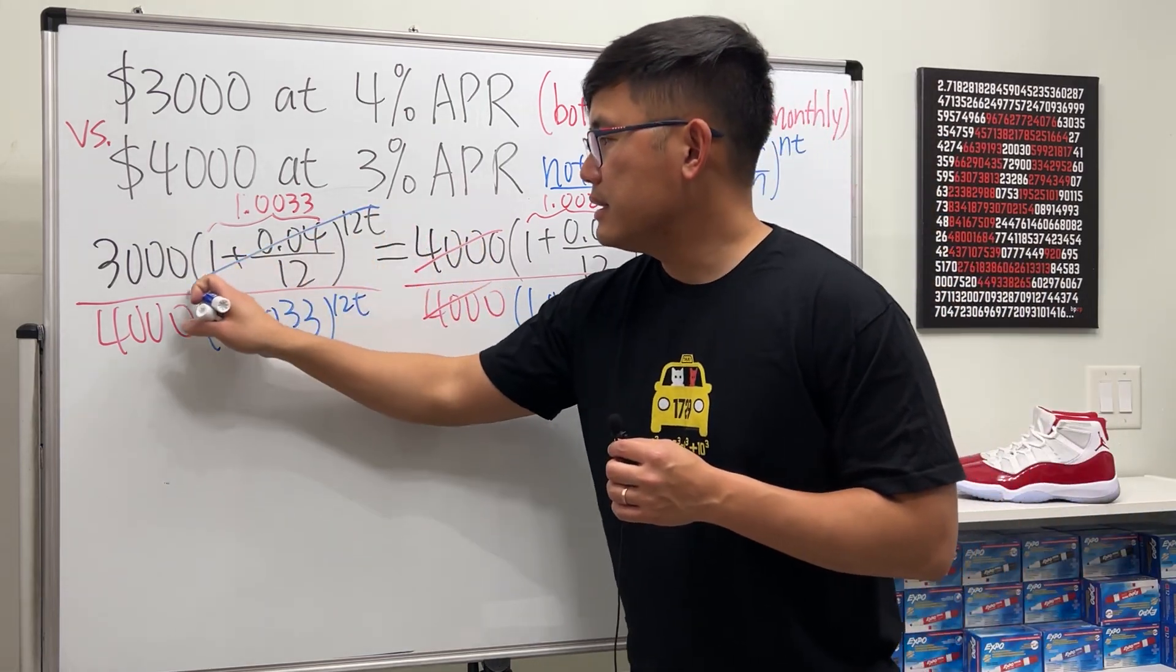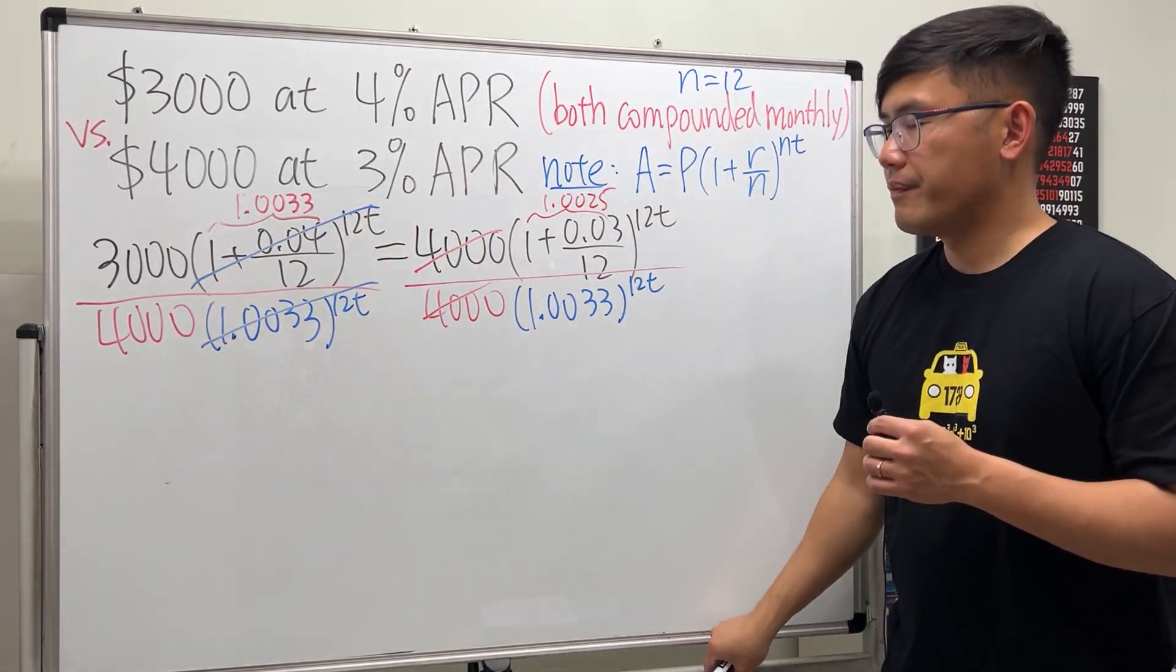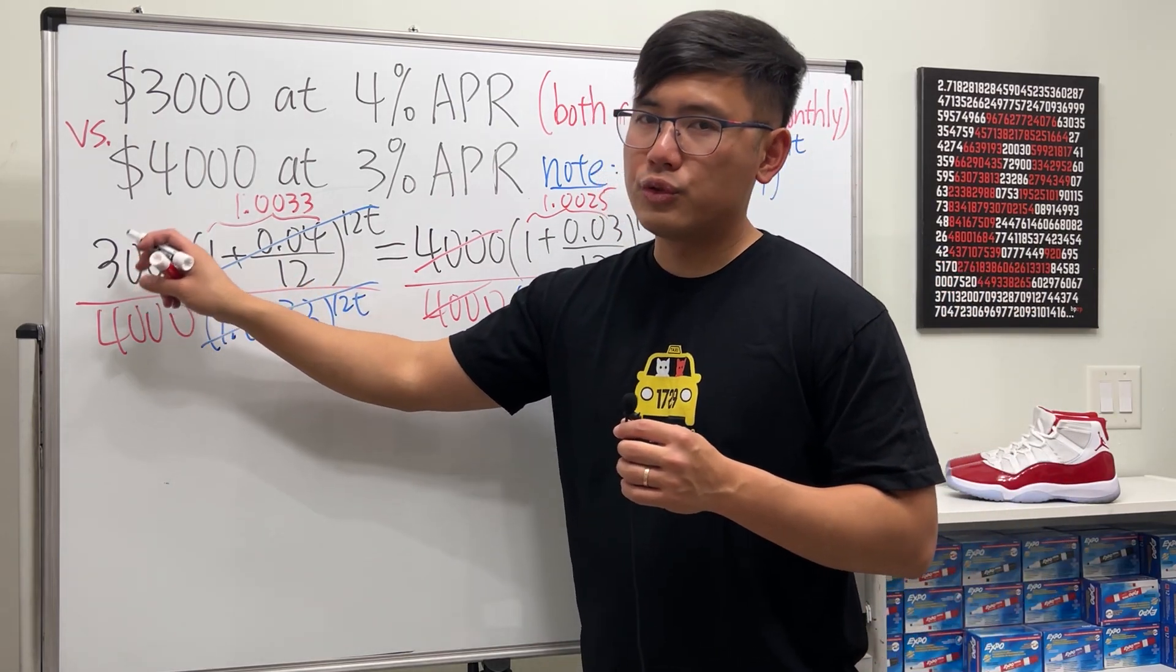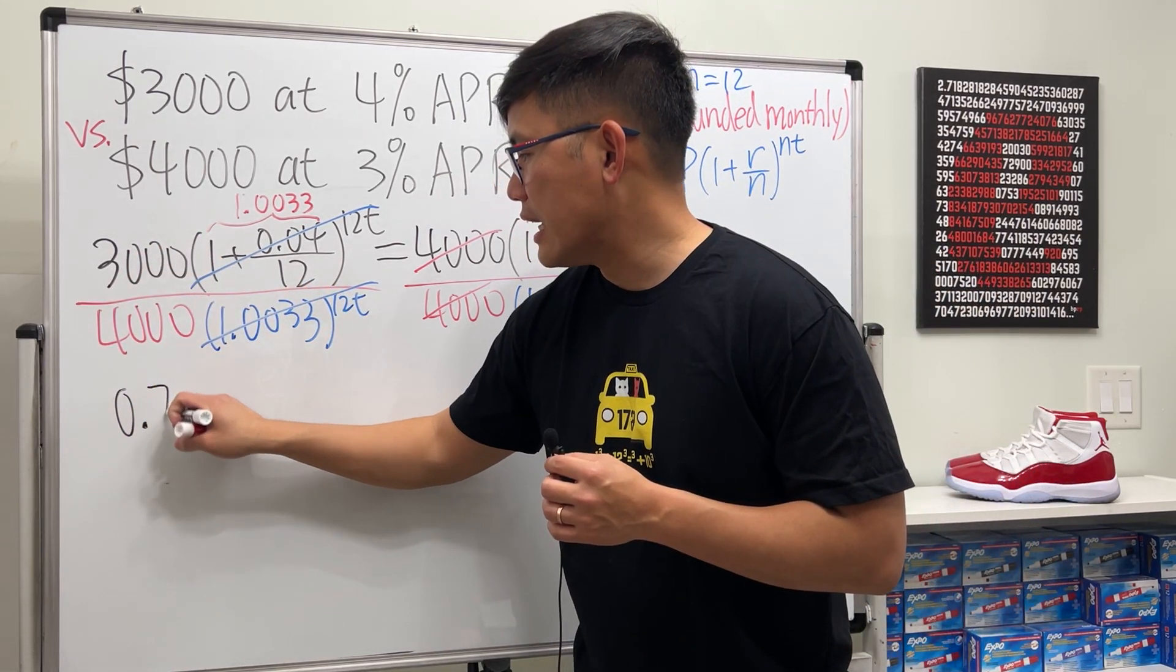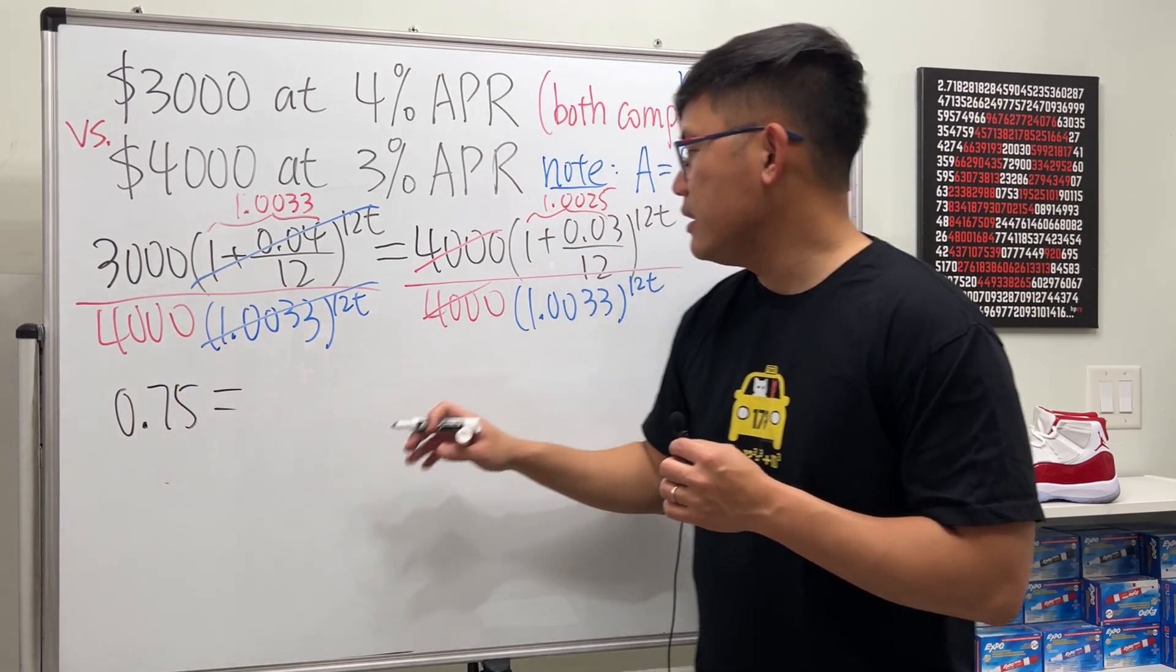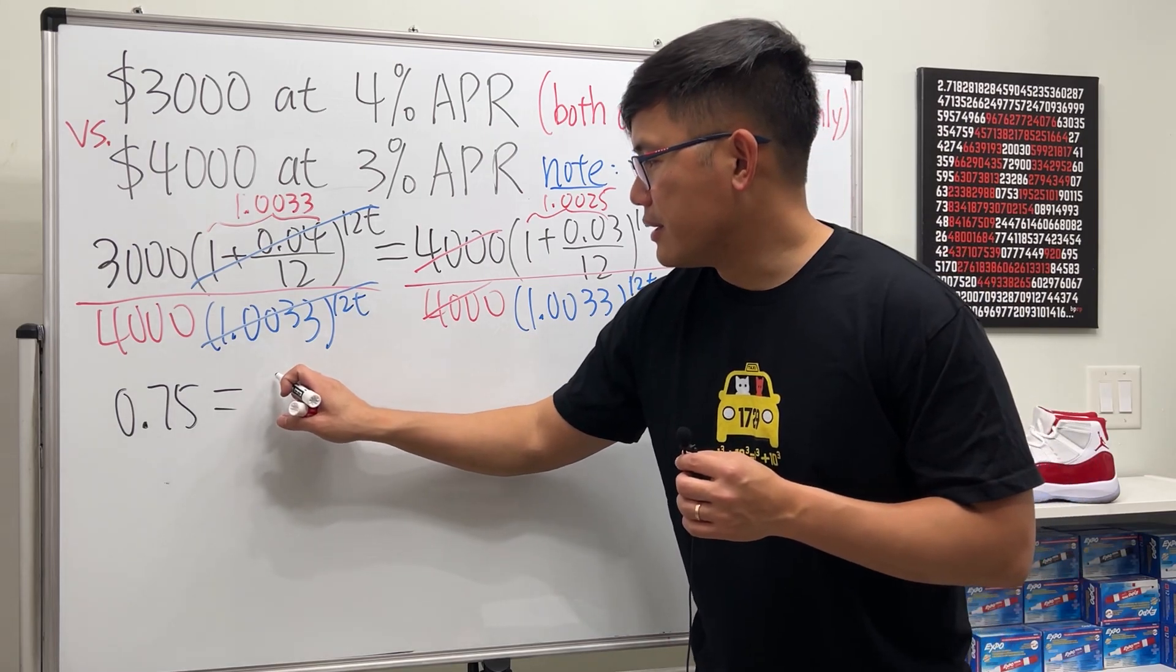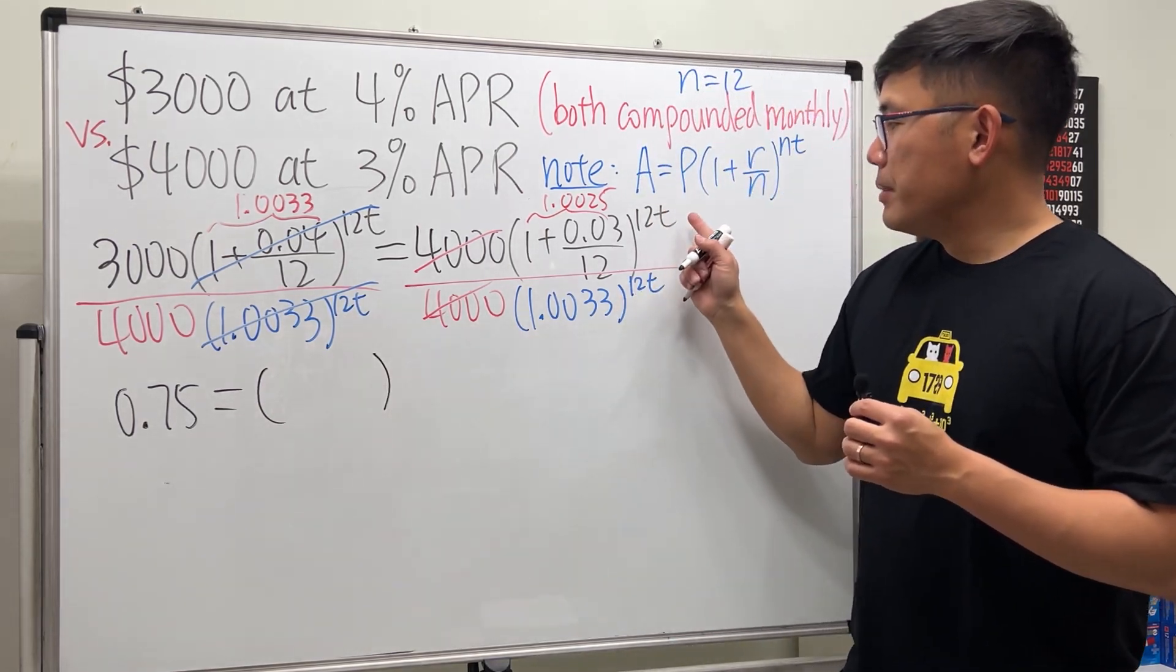On the left hand side, it's pretty much 3 divided by 4, you get 0.75.